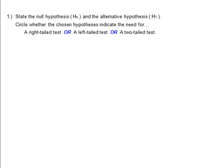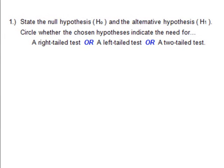First thing we want to do is state the null hypothesis denoted H sub 0 and the alternative hypothesis which is denoted H sub 1 and sometimes H sub A. We choose whether the hypotheses indicate a need for a right-tailed test or a left-tailed test or a two-tailed test.